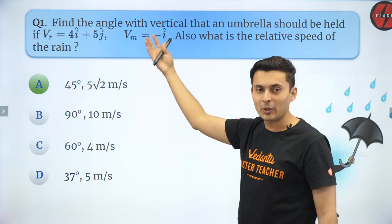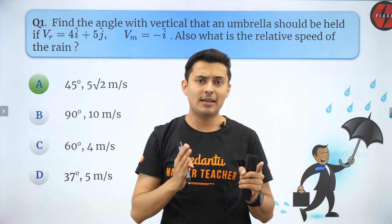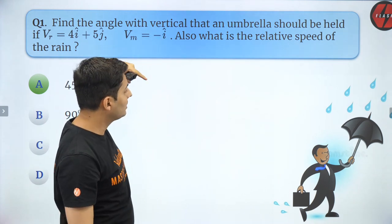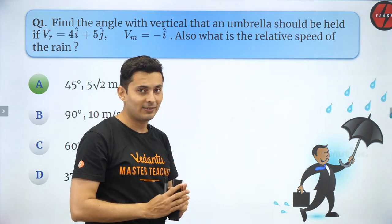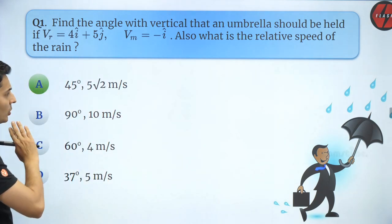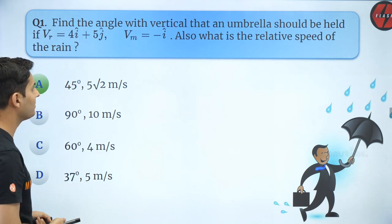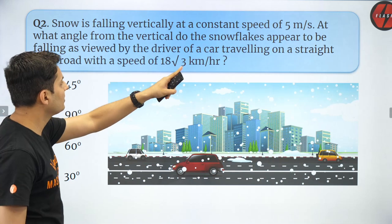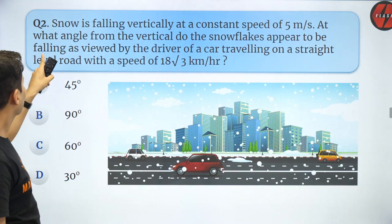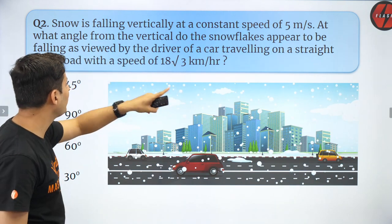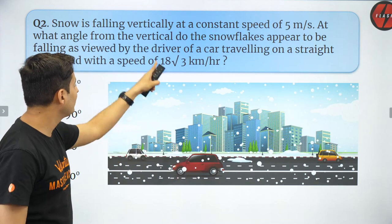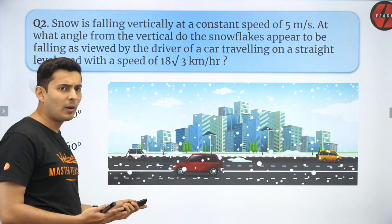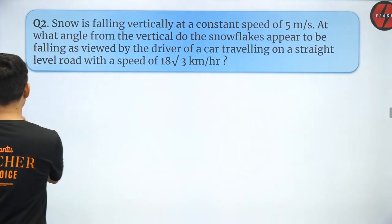Remember, JEE examiners are capable of changing the coordinate convention — instead of traditional x and y orientations, they can flip them. This problem illustrates that you can choose any sign convention, and the examiner may also choose their own. Next question: Snow is falling vertically at a constant speed of 5 m/s. At what angle from the vertical does the snowflake appear to a driver traveling on a straight road at 18√3 km/h?